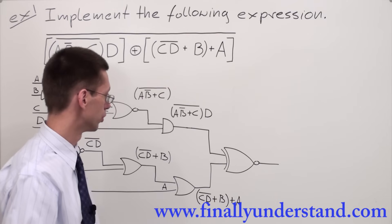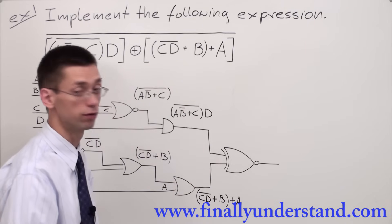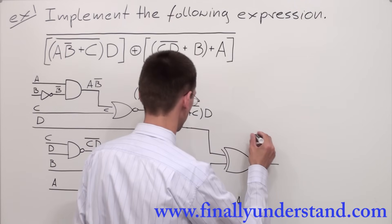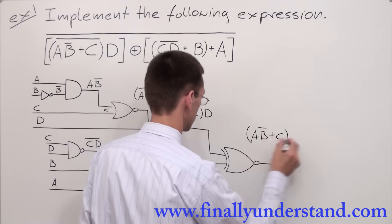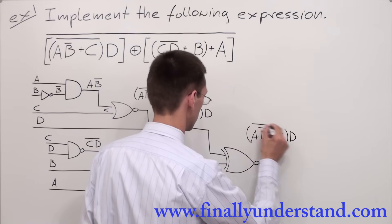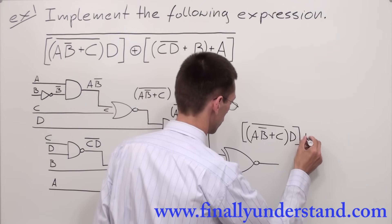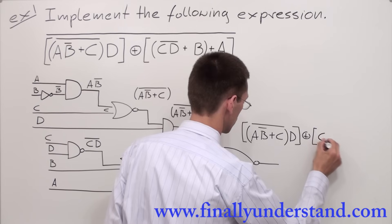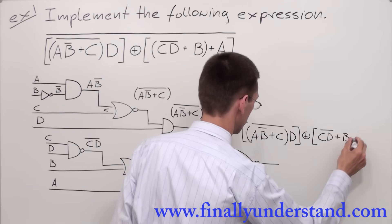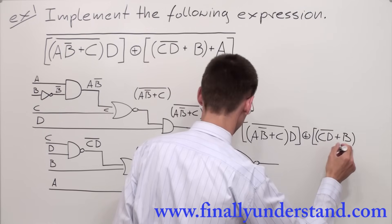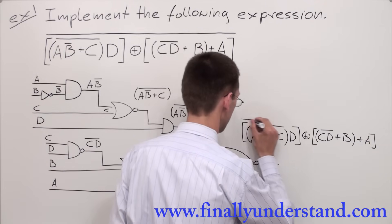This time I'm going to EXCLUSIVE NOR these two expressions which are going to the EXCLUSIVE NOR gate. So I'm going to get (AB̄+C)̄. I can close this inside of the brackets. And this is EXCLUSIVE NORed with (C̄D̄+B). We can put the parentheses over here, plus A. And everything has to be inverted.